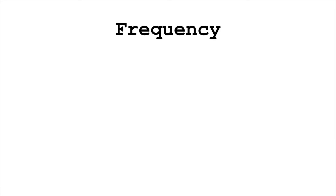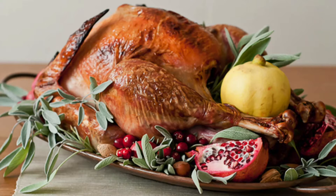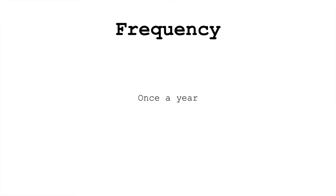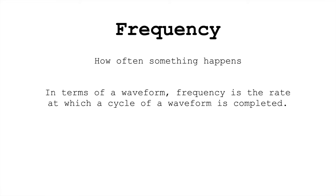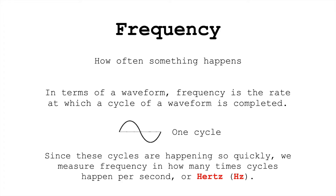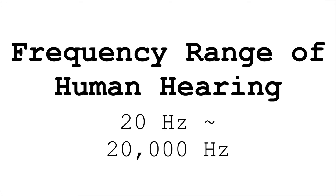Frequency is how often something happens. The frequency of Thanksgiving is once a year — once, over the span of a year. When we talk about the frequency of waveforms, we want to talk about the rate at which cycles are completed. A cycle is an oscillation from rest to high pressure to low pressure and then back to rest. In order for vibration to be a sound, these need to happen quickly, so we want to talk about how many cycles per second something is. The unit for cycles per second is hertz. The range of human hearing is from 20 hertz — 20 cycles per second — to 20,000 hertz, or 20,000 cycles per second.